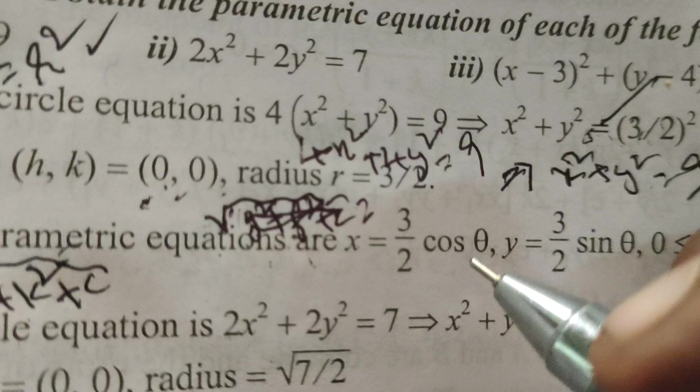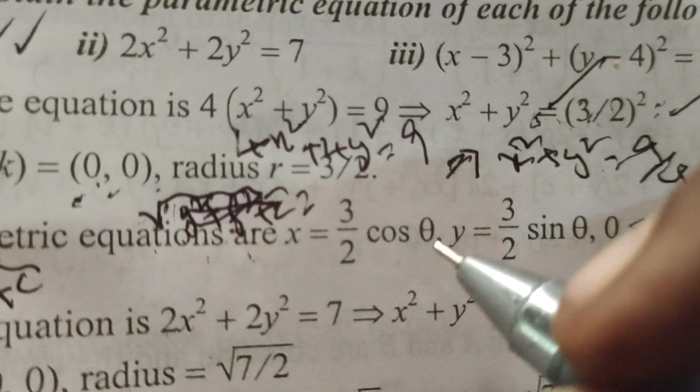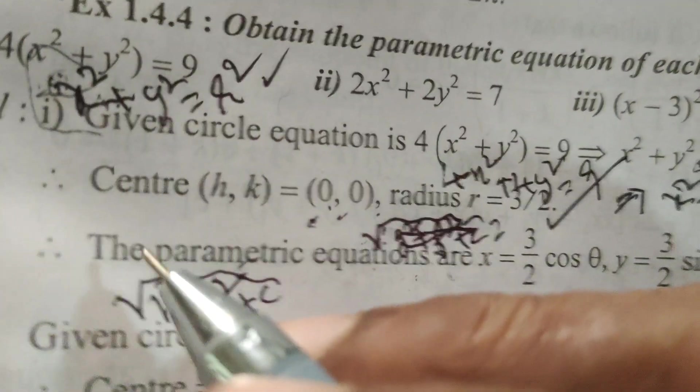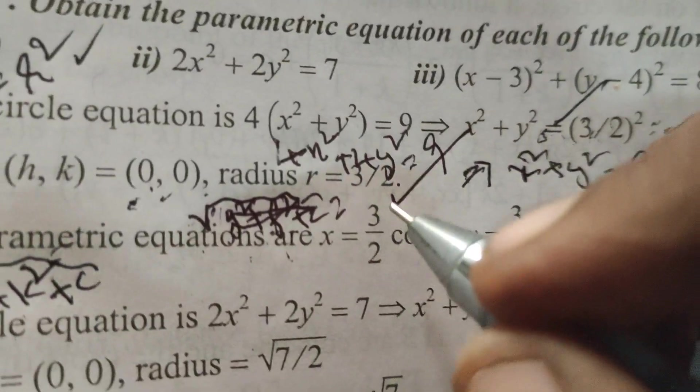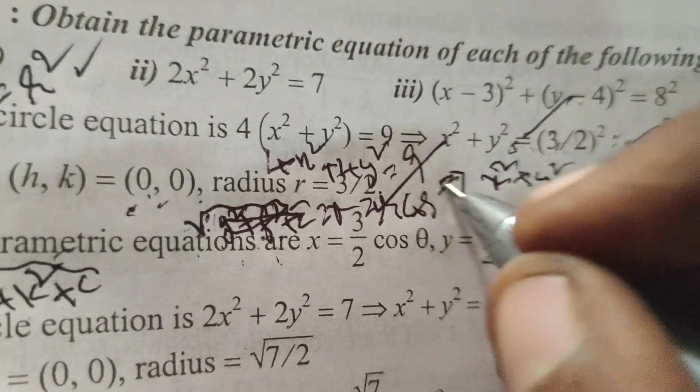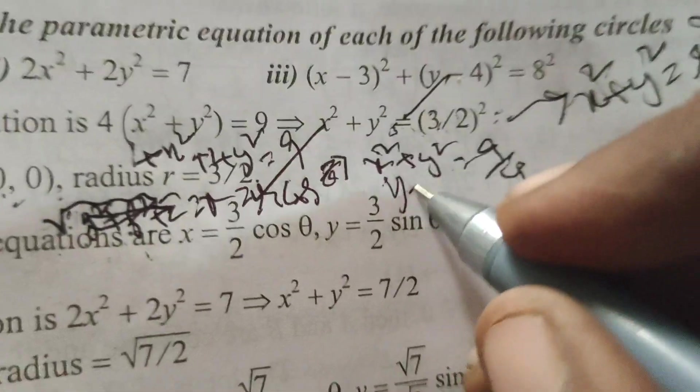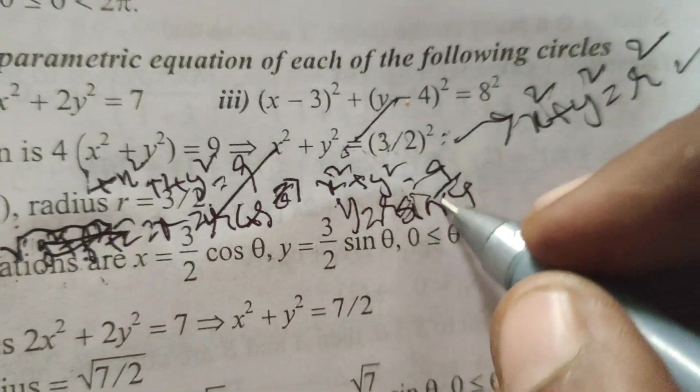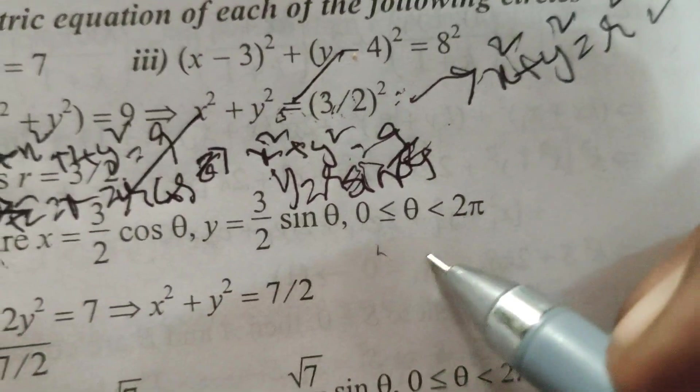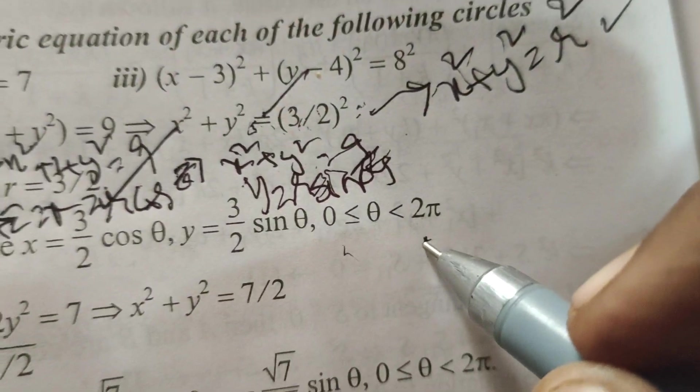Find out the parametric equations, x equals to r cos theta, that is 3 by 2 cos theta. y equals to r sin theta. That is 3 by 2 sin theta. Here, 0 less than theta less than 2 pi.